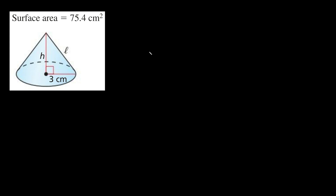We can use the formula for the surface area of a right cone, which is: surface area equals π r squared plus π r l, where r is the radius of the cone and l is the slanted height — that is, the hypotenuse of the right triangle.